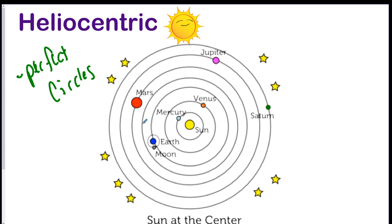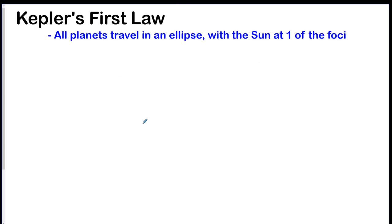So the modern heliocentric model, the model that we use today, has this diagram, which you're seeing in front, including the new planets we discovered, plus the fact that the orbits are not perfect circles. So now what we're going to talk about is three laws. Kepler's first law states that all planets travel in ellipses with the Sun at one of the foci. So we're going to go over what that means real quick.